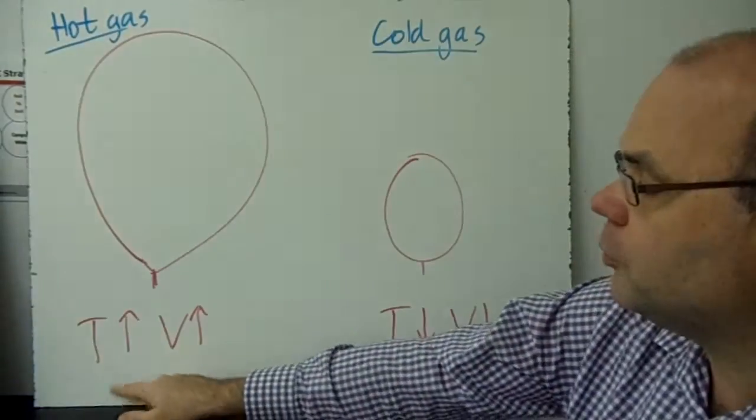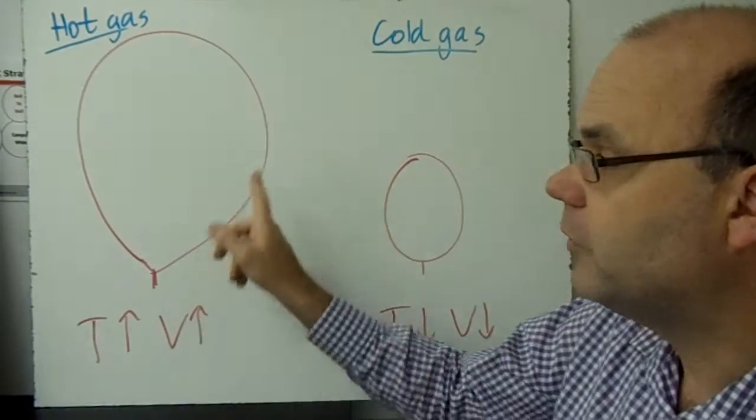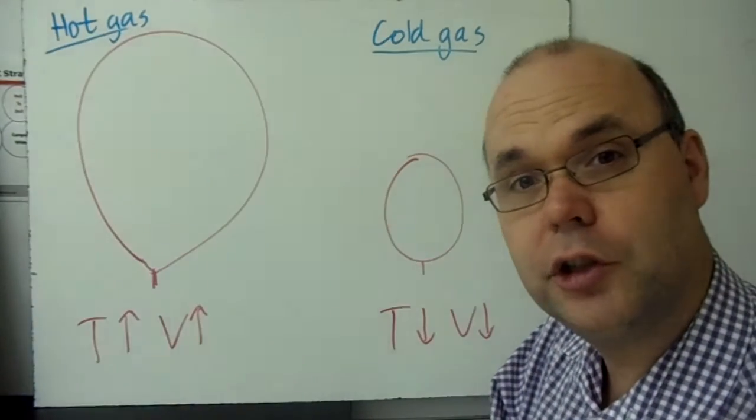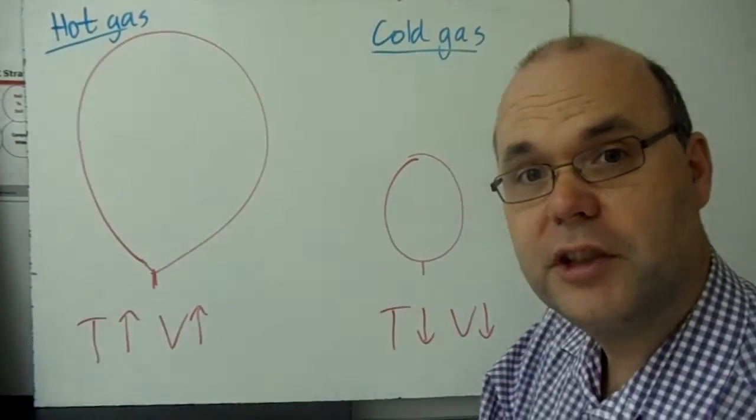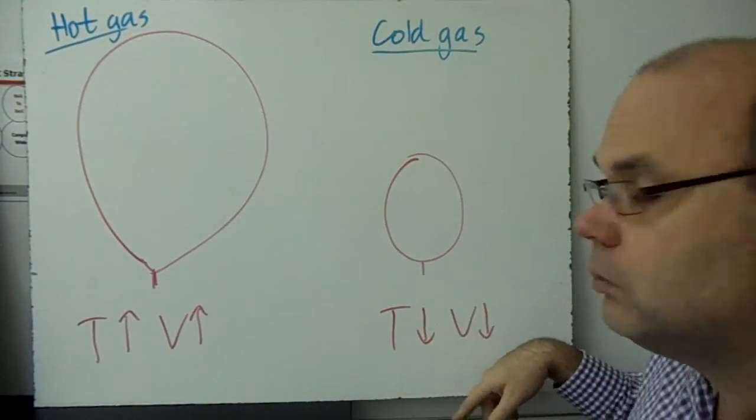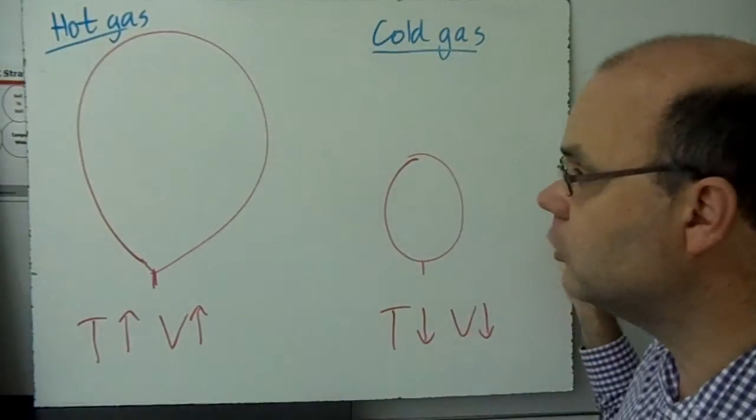So when the temperature goes up, the volume goes up if it can. If it can't, if you've got it in a metal box, it's like the first picture I showed you, it just gets a higher pressure. As the temperature goes down, the volume goes down, or if it can't get smaller, the pressure goes down.